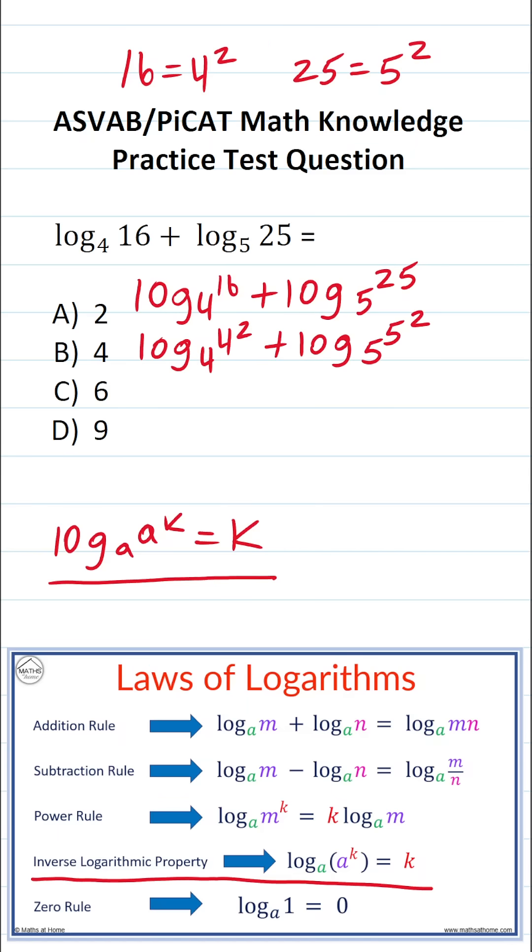And again, according to the inverse logarithmic property, this is going to be 2 plus 2. 2 plus 2 is 4. So the answer to this one is simply 4.